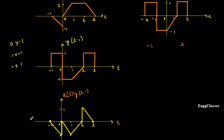From t = 3 onwards, everything is going to be 0. And from minus infinity till t = minus 1, everything is also 0. This is how the final signal x(t)·y(t-1) looks. The only trick in this numerical is which value to consider at positions 0, 1, 2, and 3 — whenever a signal takes two different values, which one to take. That is the trick I explained. Please follow that and you will definitely understand and can solve any numericals on these concepts. Thank you everyone for watching.